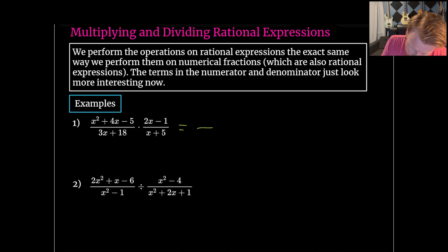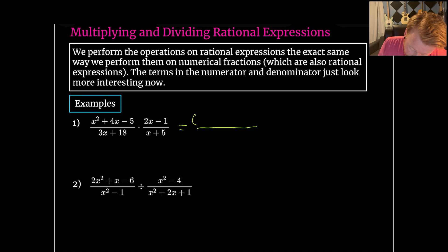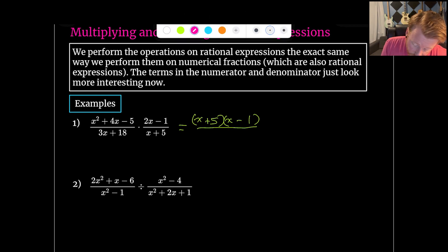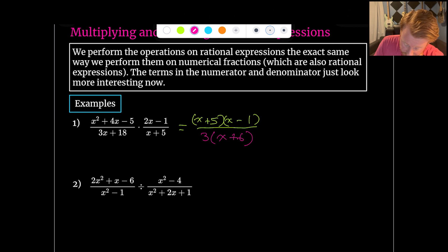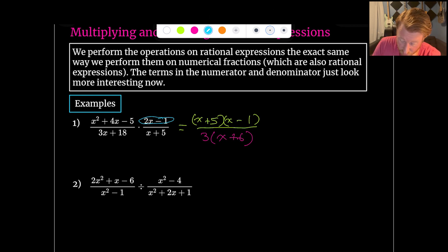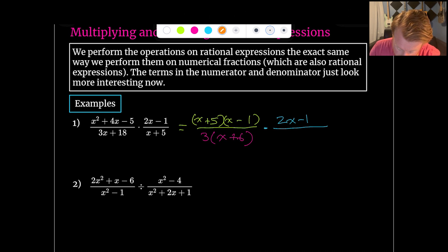Looking at the first multiplication example, there are some polynomials I can factor. For x² + 4x − 5, I can factor that into (x + 5)(x − 1). For the denominator, 3x + 18, there's a 3 in common, so I can factor out a 3, leaving 3(x + 6). Now looking at the second fraction: 2x − 1 has nothing to factor, and x + 5 in the denominator has nothing to factor either.